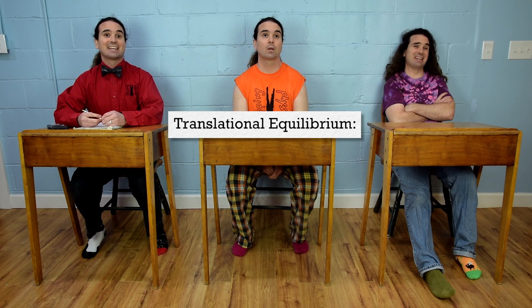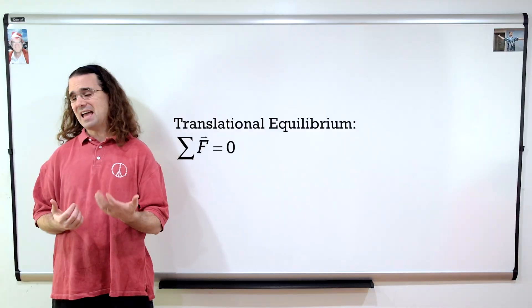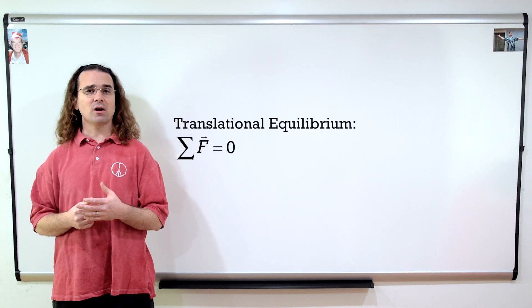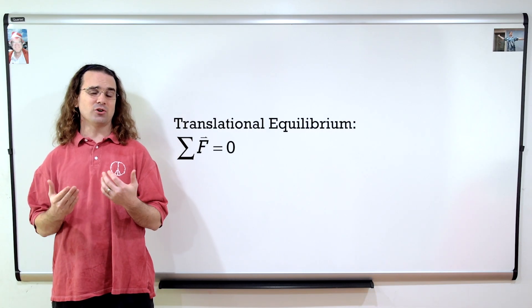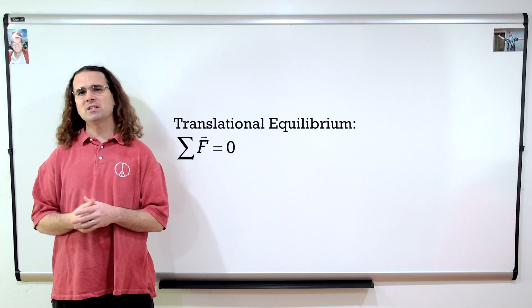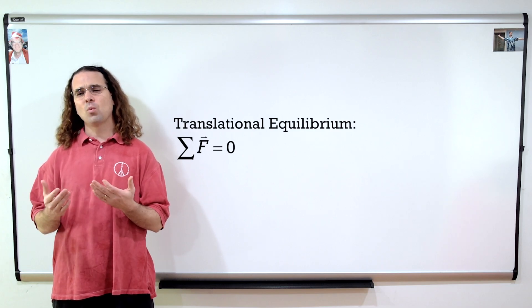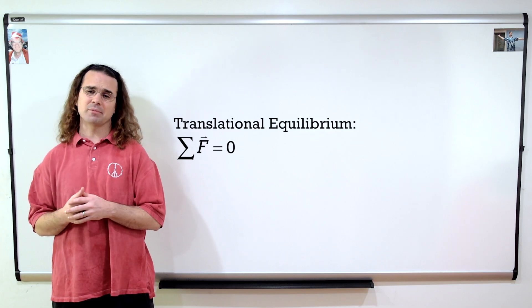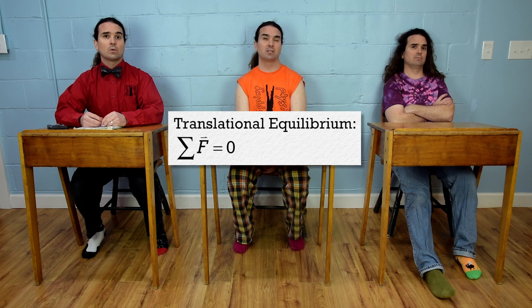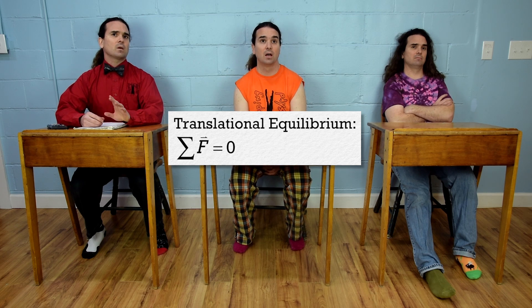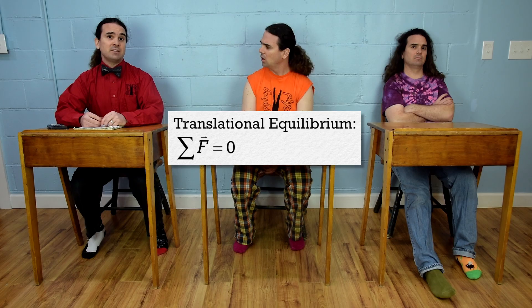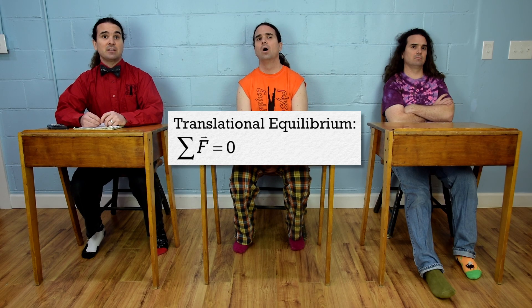An object is in translational equilibrium when the net force acting on the object equals zero. When the net force acting on an object equals zero, the object is in translational equilibrium. Bobby, what does it mean physically for an object when it is in translational equilibrium? That means the object is not moving. Remember, an object that is not moving is in translational equilibrium. However, an object in translational equilibrium is not necessarily not moving.